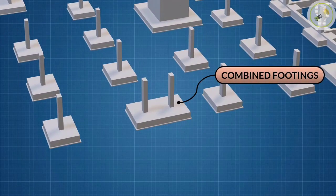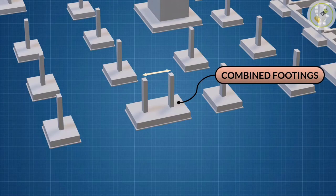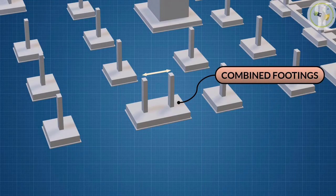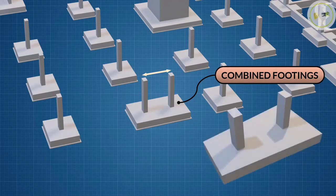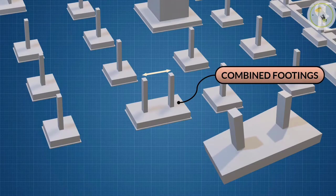A combined footing supports two columns. It is used when the two columns are so close to each other that their individual footings would overlap. A combined footing is also provided when the property line is so close to one column that a spread footing would be eccentrically loaded when kept entirely within the property line.